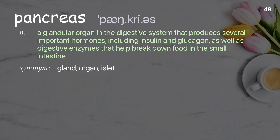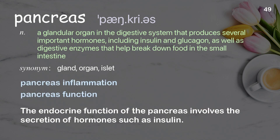Pancreas. A glandular organ in the digestive system that produces several important hormones, including insulin and glucagon, as well as digestive enzymes that help break down food in the small intestine. Examples: pancreas inflammation, pancreas function. The endocrine function of the pancreas involves the secretion of hormones, such as insulin.